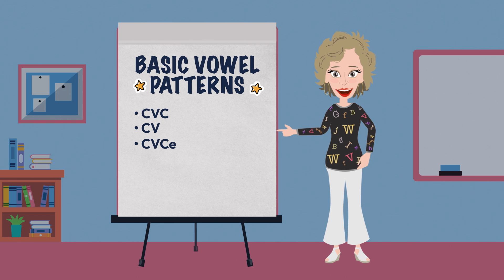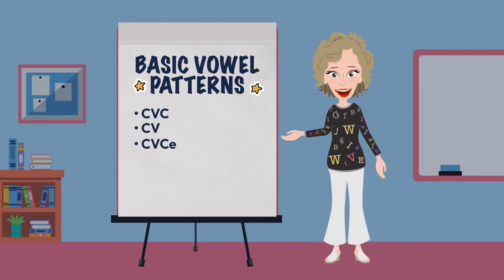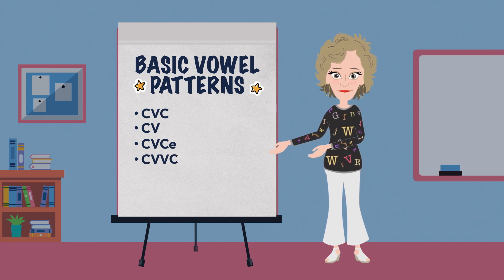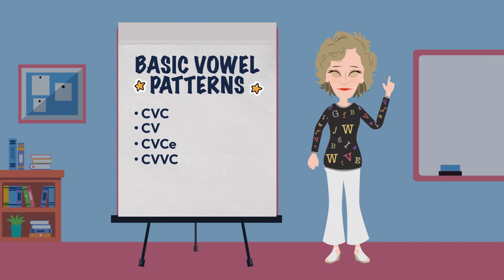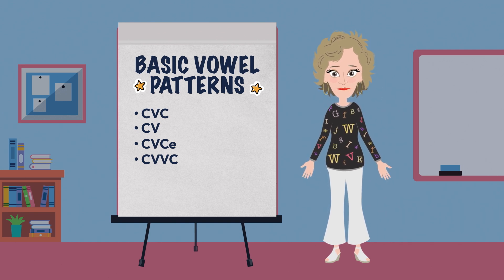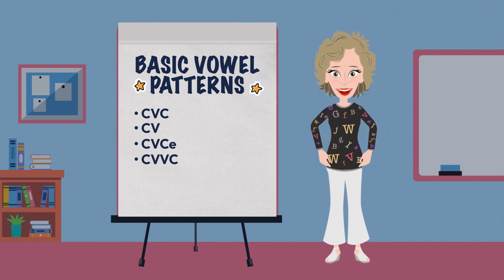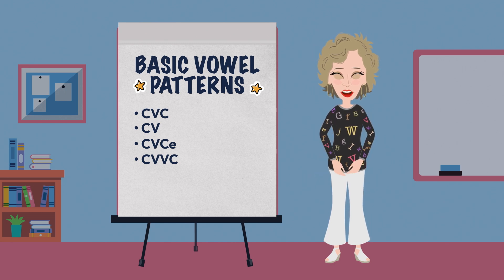The silent or final E pattern, known as the CVCe pattern, is also very common — there are two vowels in a single syllable word where the first vowel precedes the last consonant, which is followed by a silent E; the first vowel spells its long sound. Then there is the CVVC pattern, which has two major parts: vowel digraphs, where two vowels appear together but only the first has a sound — the long sound — while the other is silent; and vowel diphthongs, where two vowels side by side together produce a gliding sound where the mouth begins at one position and slides into another as the sound is uttered.